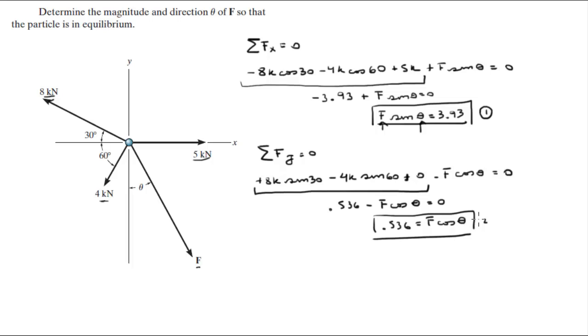So when you divide the first by the second, that's what I'm doing—I'm dividing this by the second—I get on the top f sine of theta is equal to 3.93 and at the bottom I get f cosine of theta is equal to 0.536. The f's cancel out; you know that sine of theta over cosine of theta is equal to tangent of theta, and that is equal to 3.93 over 0.536.